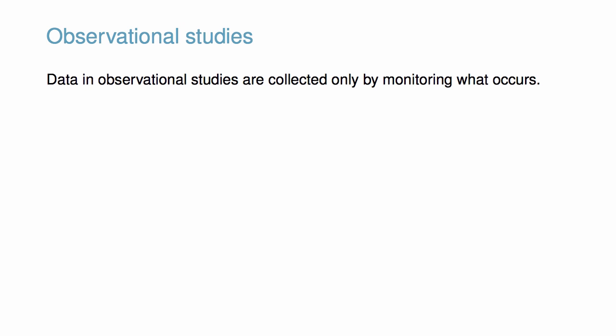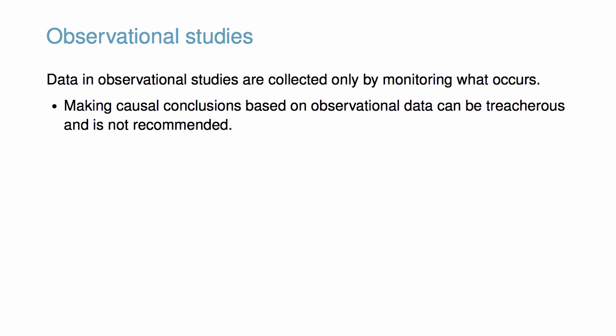In an experiment, the researcher controls the assignment of the treatment to each subject. In contrast, data in observational studies are collected only by monitoring what occurs naturally. Consequently, making causal conclusions based on observational data can be treacherous and is not recommended.